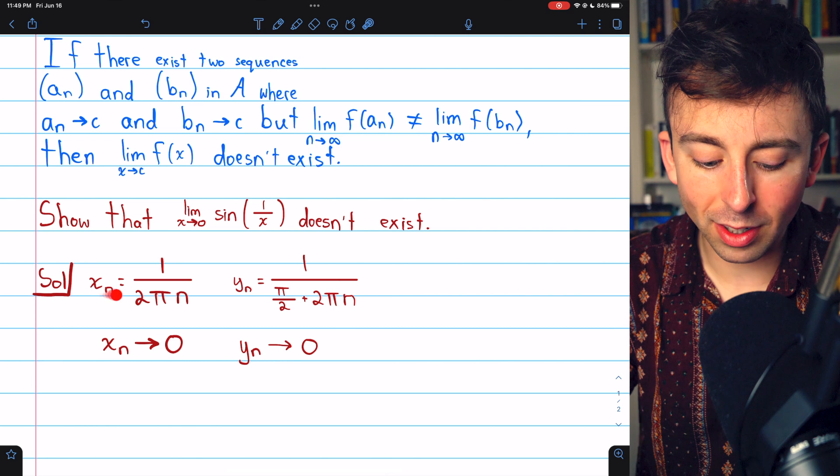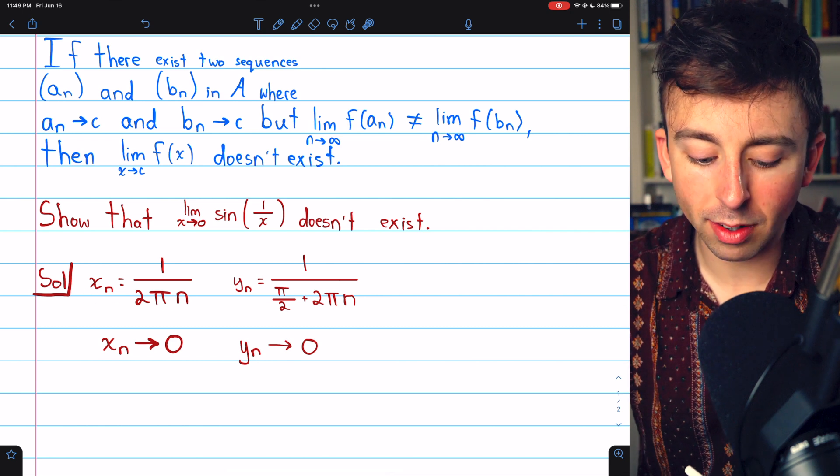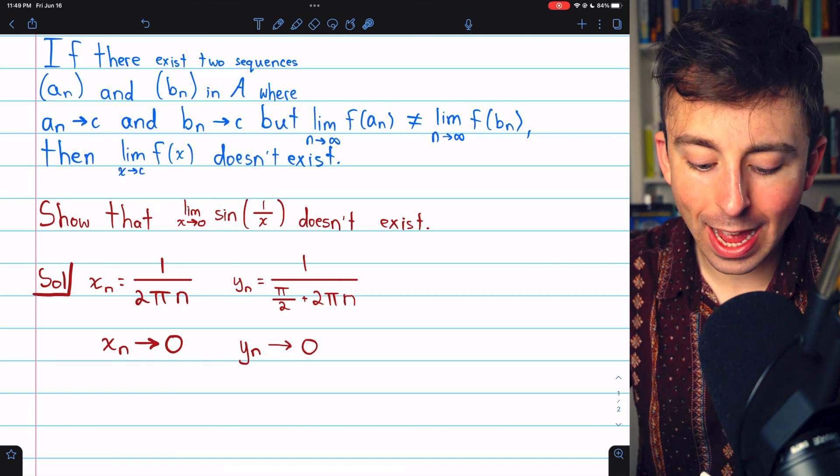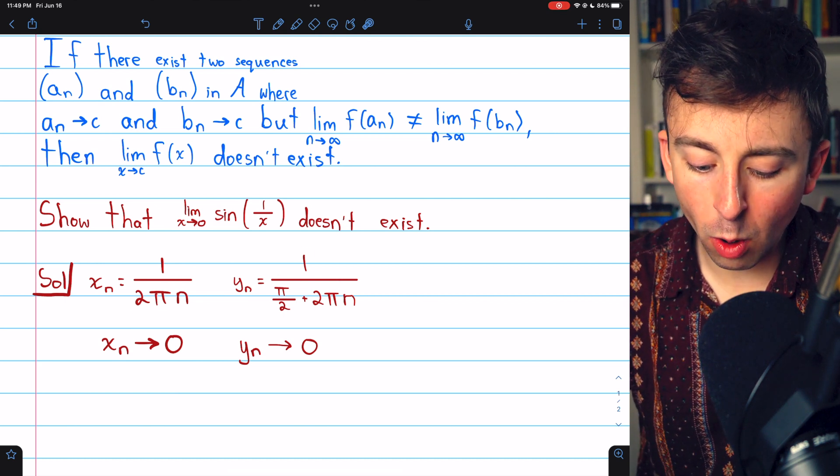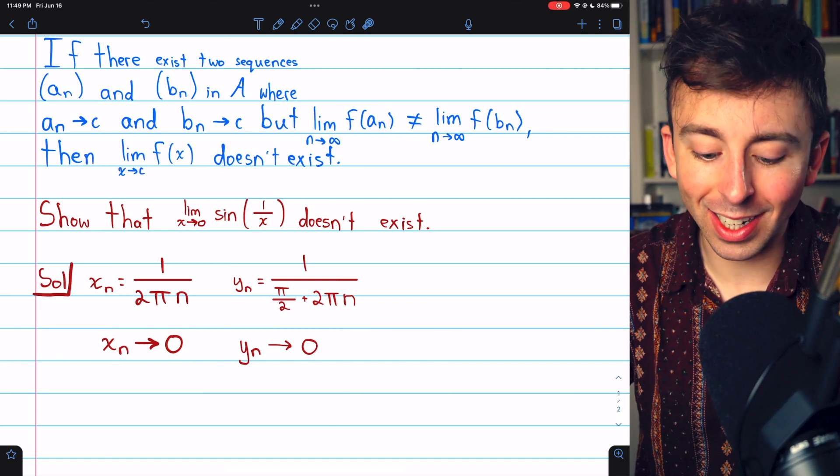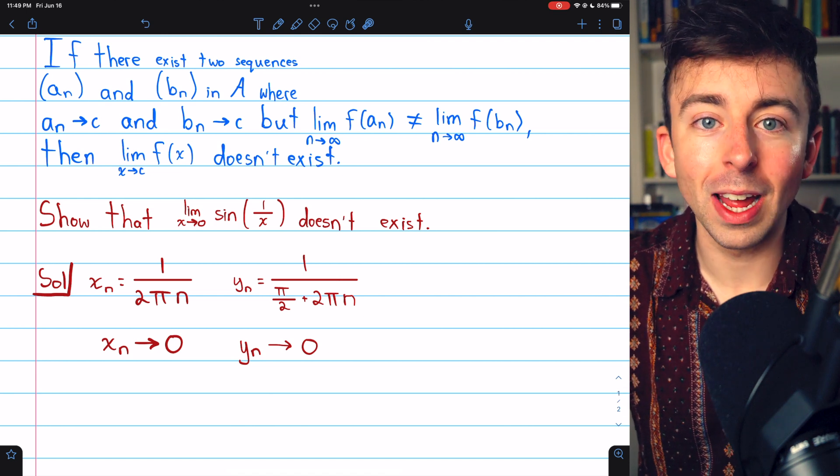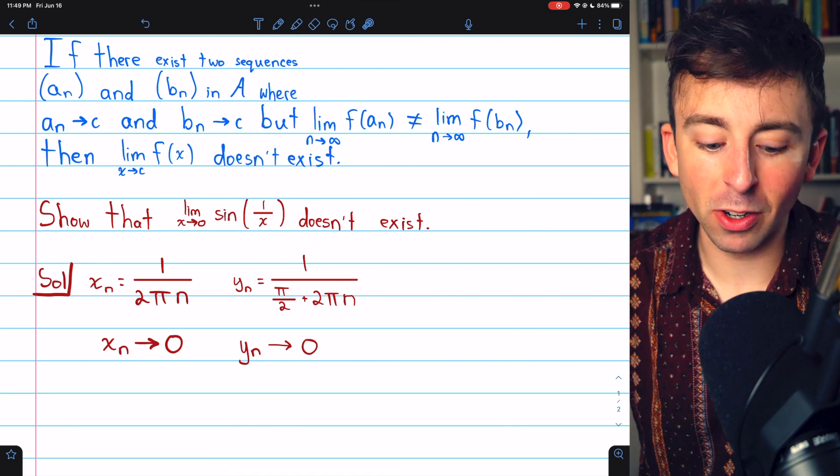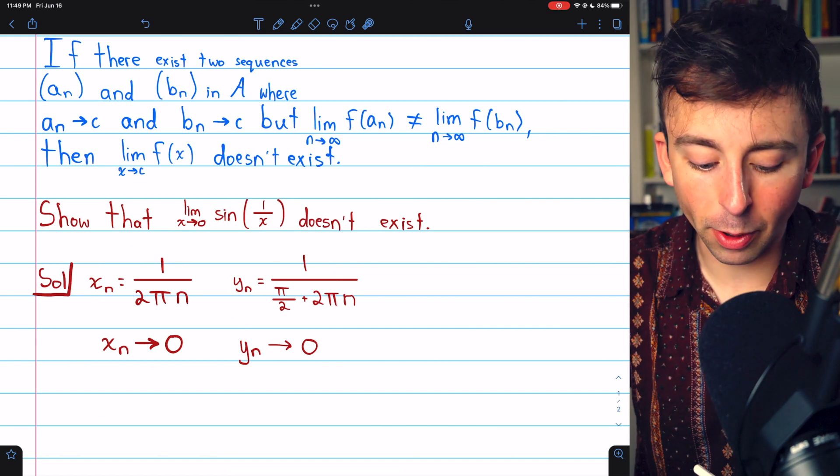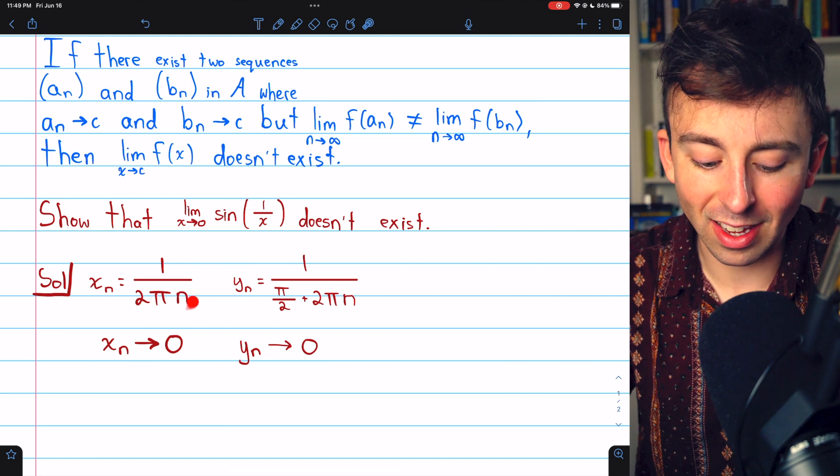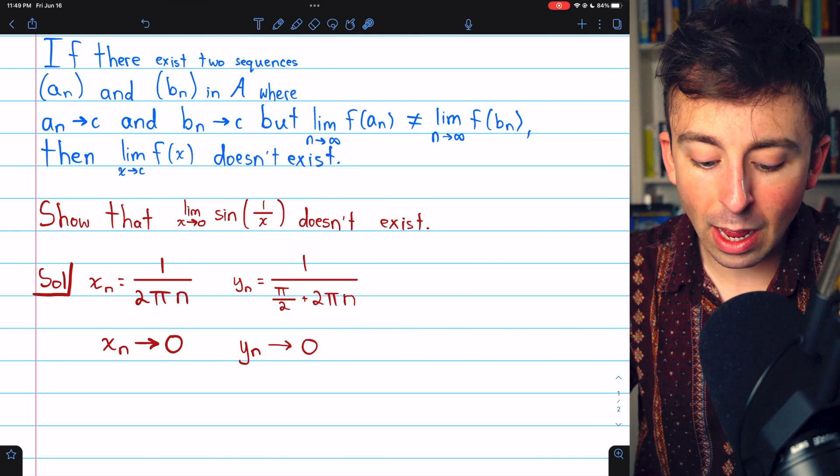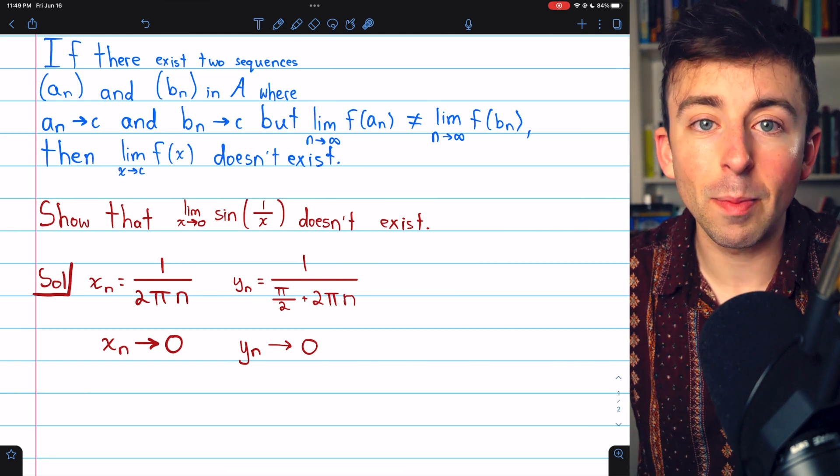The two sequences we're going to use are xₙ and yₙ. xₙ = 1/(2πn) and yₙ = 1/(π/2 + 2πn). You can see when we plug these into sin(1/x), we're going to get a bunch of zeros for xₙ and a bunch of ones for yₙ. Now clearly xₙ converges to zero because as n goes to infinity, the denominator just gets really big. And yₙ also converges to zero by the same exact logic.